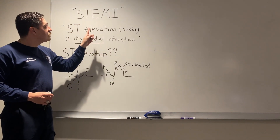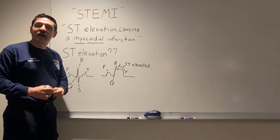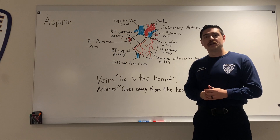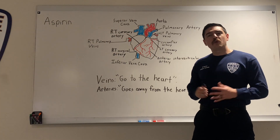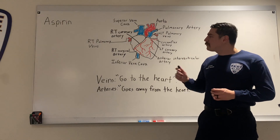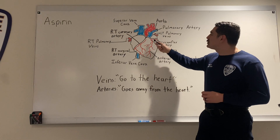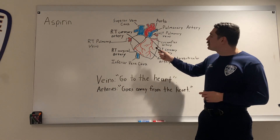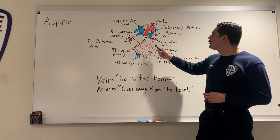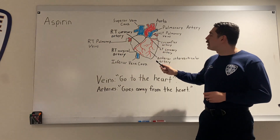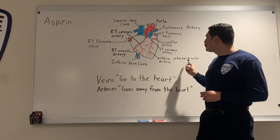A STEMI is ST elevation causing a myocardial infarction — a lack of oxygen to the heart. Now that we have a deeper understanding of STEMI, where does aspirin come into play? We first need to think of the heart as a muscular tissue that has its own arteries and veins. You can see some of the arteries here: the circumflex artery, the left and right coronary artery, the right marginal artery, and the anterior interventricular artery.